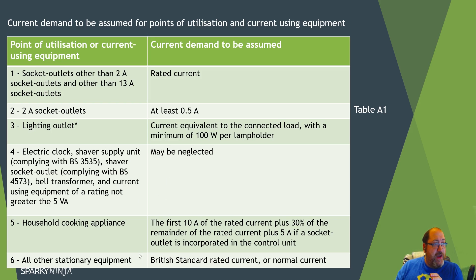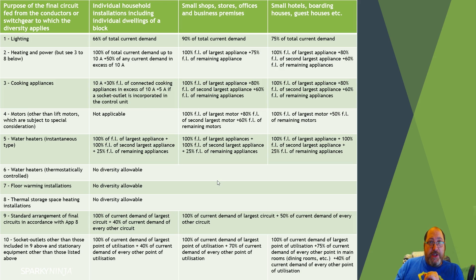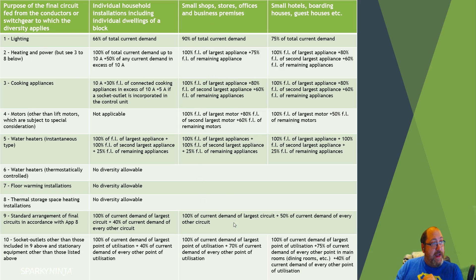Other stationary equipment rated at 3kW isn't applicable here, and the household cooking appliances section doesn't apply either since our cooking appliances aren't for household purposes. We will use table A2 a lot — specifically the small shops column. We apply this to lighting, then to the power circuit, cooking appliances, and socket outlet arrangements.